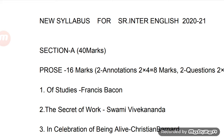In Section A we have prose, poetry, and non-tell text. Prose carries 16 marks, divided into two annotations: 2 into 4 marks equals 8 marks, and 2 into 4 equals 8 marks for two questions.